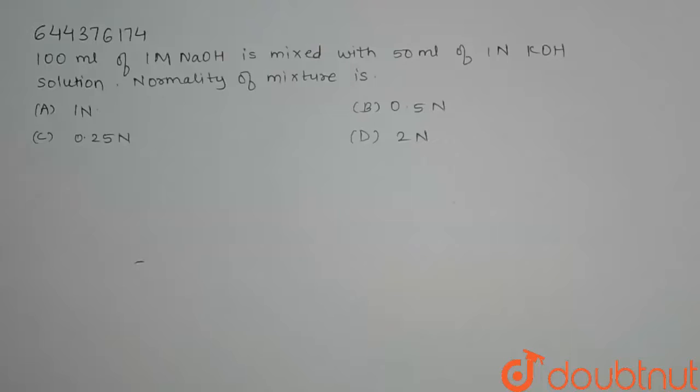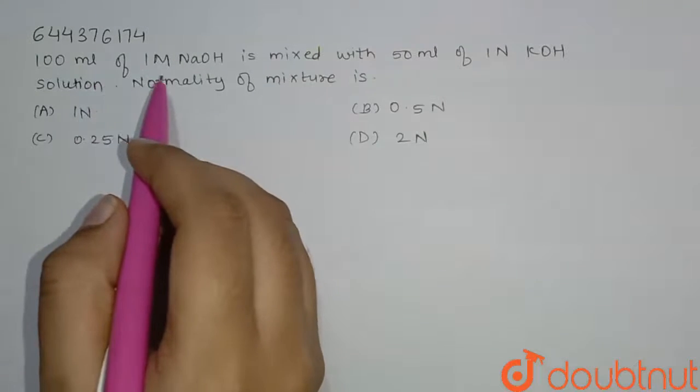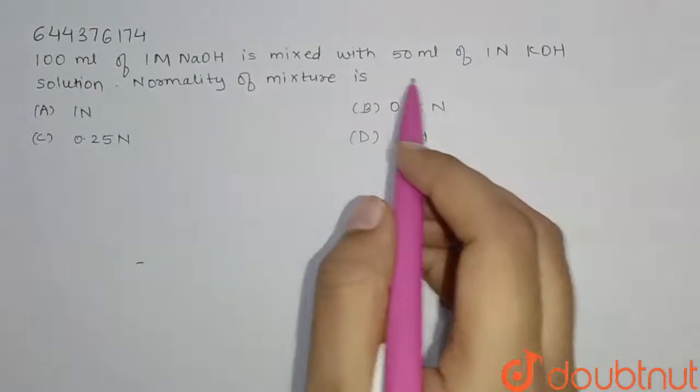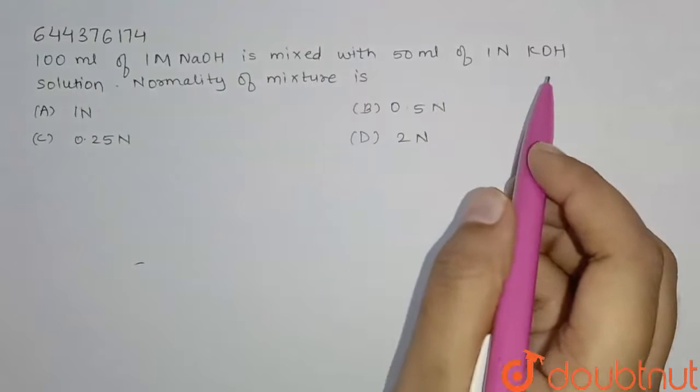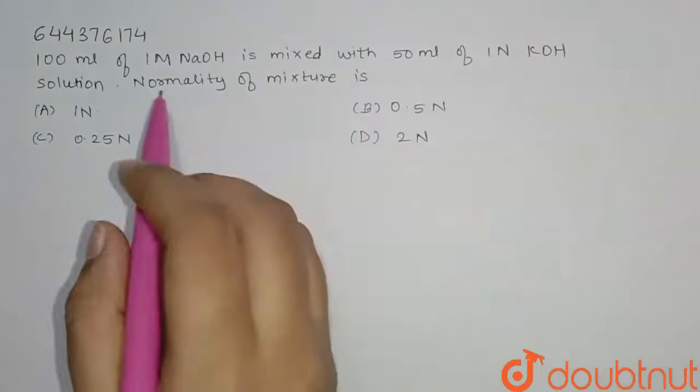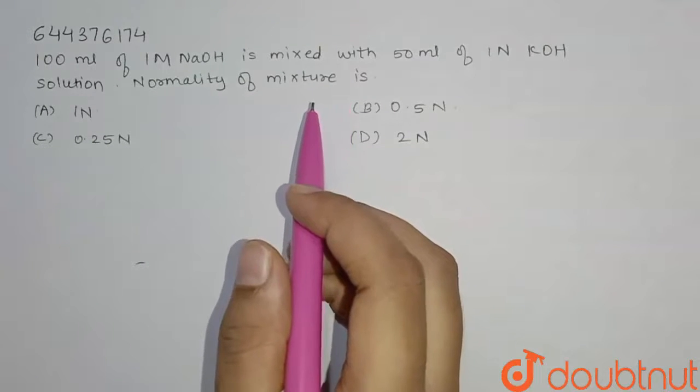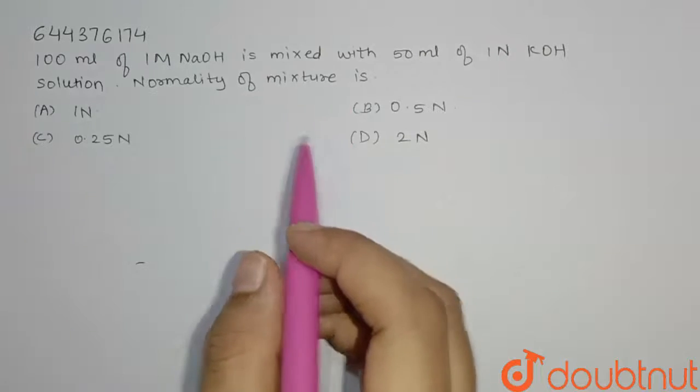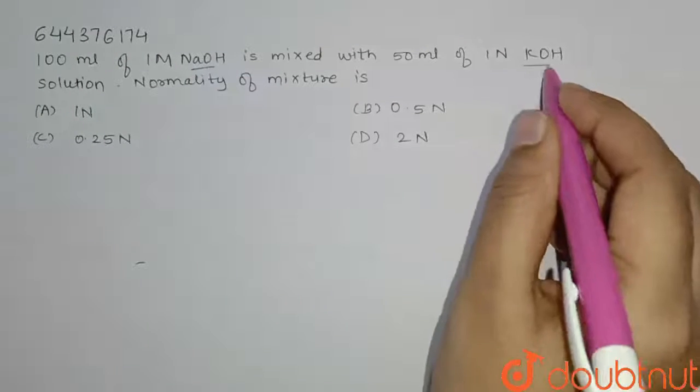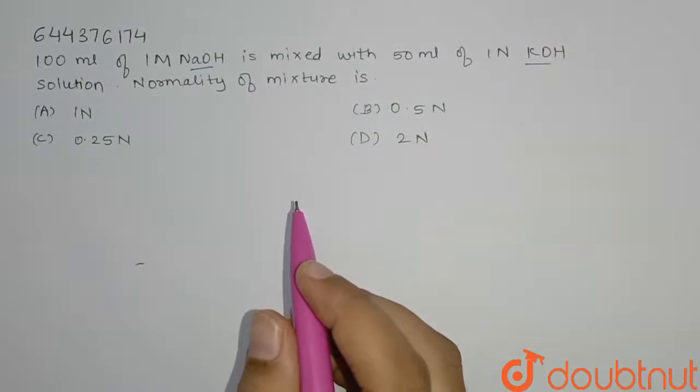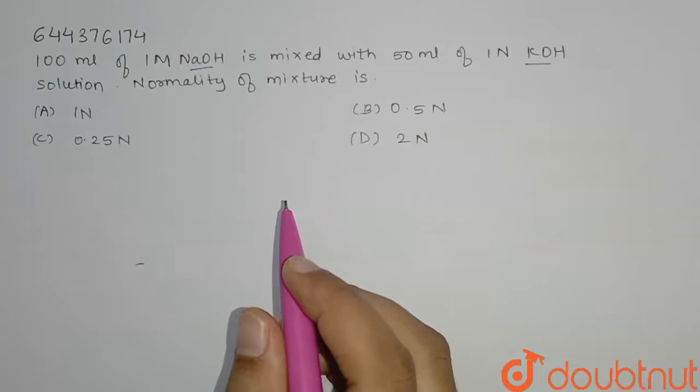Hello everyone, the question is: 100 ml of 1 molar NaOH is mixed with 50 ml of 1 normal KOH solution. Normality of mixture is? So we have to find here normality. We have given two molecules here, NaOH and KOH. We have given molarity of NaOH and normality of KOH.